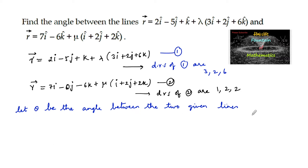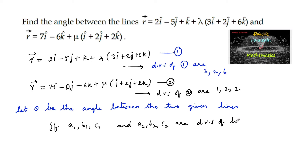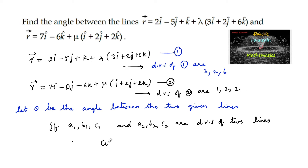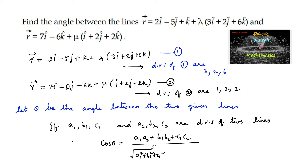If a1, b1, c1 and a2, b2, c2 are direction ratios of two lines, and theta is the angle between the two lines, then we have: cos theta is equal to (a1·a2 plus b1·b2 plus c1·c2) divided by the root of (a1² plus b1² plus c1²) into the root of (a2² plus b2² plus c2²).